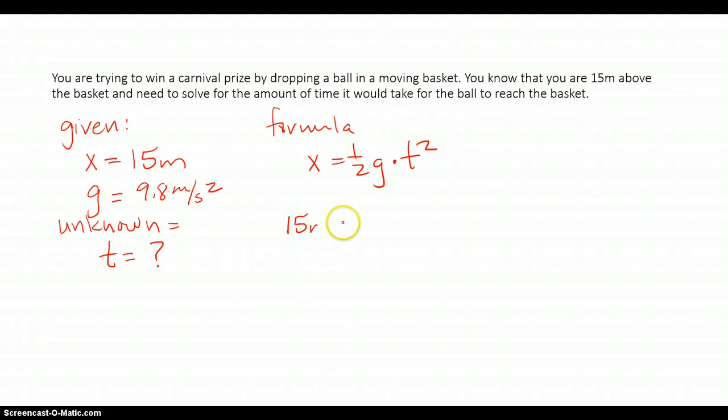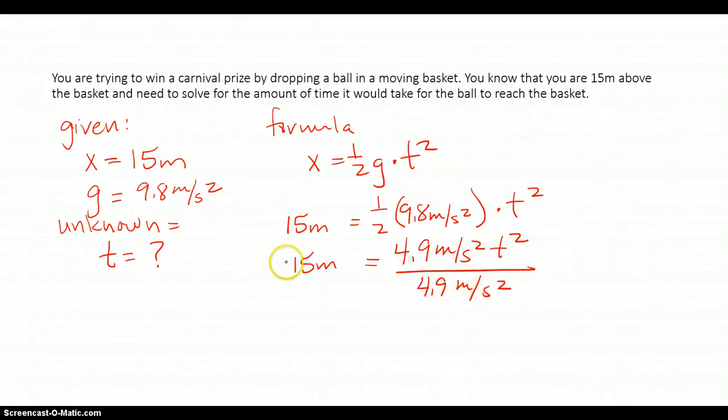Now this one is going to be a little tricky because you have to deal with square roots. So I have one half 9.8 meters per second squared times t squared. So let's rewrite that to simplify that to be 4.9 meters per second squared t squared. I want to get t squared all by itself so I divide each side by 4.9 meters per second squared as well as this one, 4.9 meters per second squared.